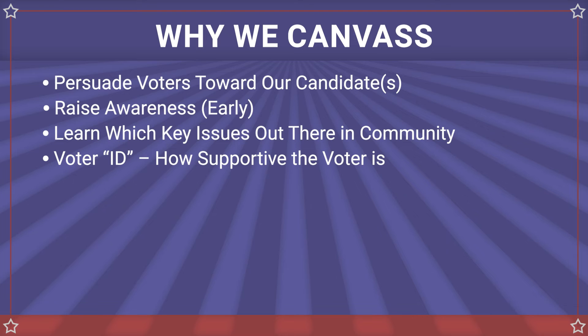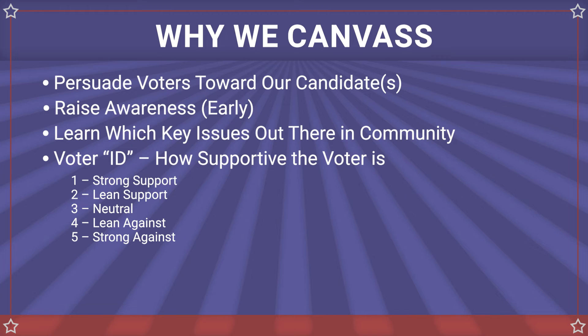In addition, it's important to assess how supportive the voter is to our candidate, so the campaign can follow up as appropriate. This is called assessing voter ID, or assessing voter support for a candidate. It's measured on a scale of one to five, where one is most supportive and five is strongly opposed. Even if you find someone who does not support your candidate, that is really valuable information for a campaign.